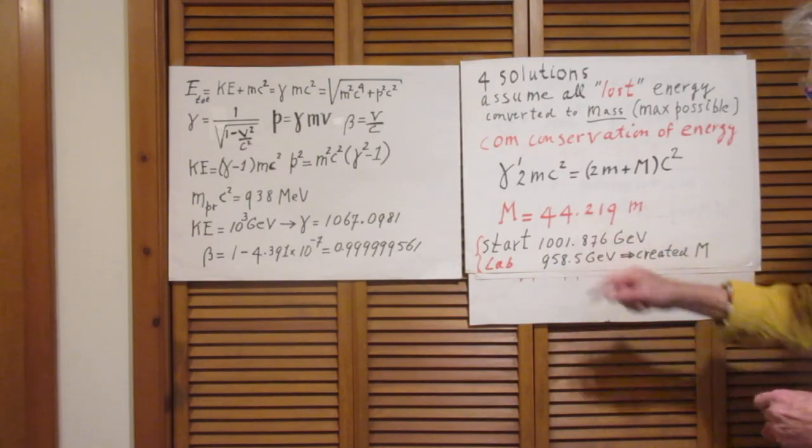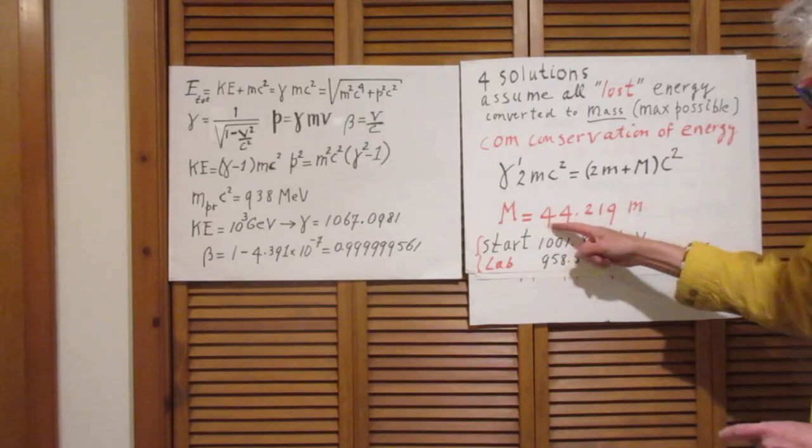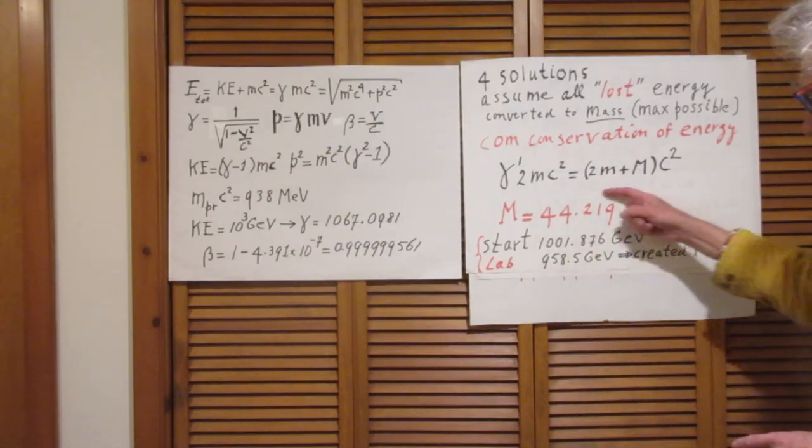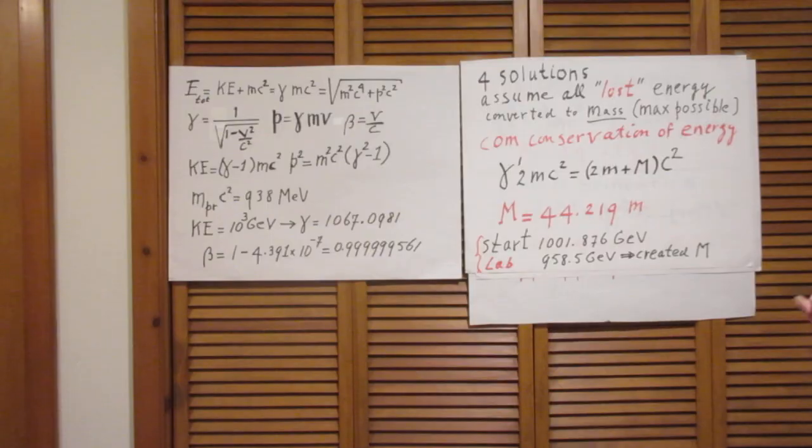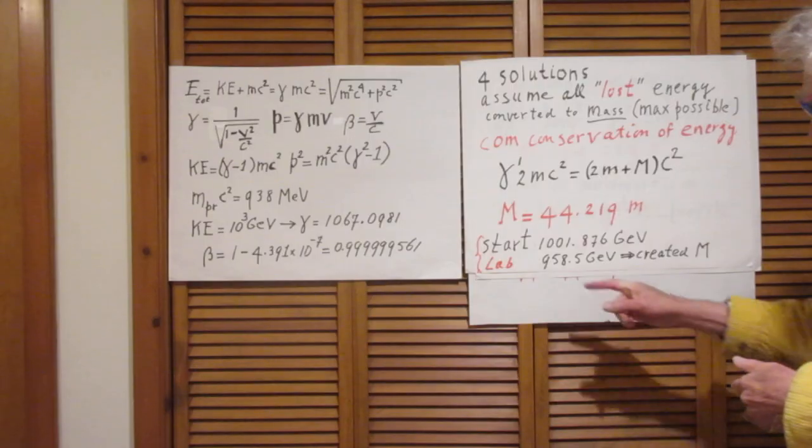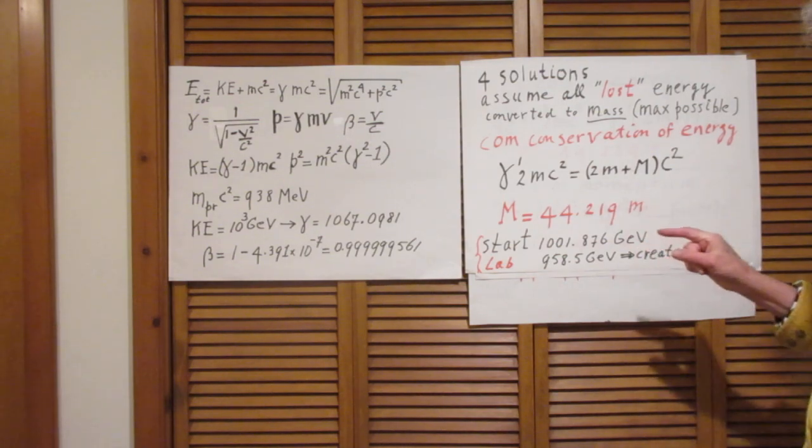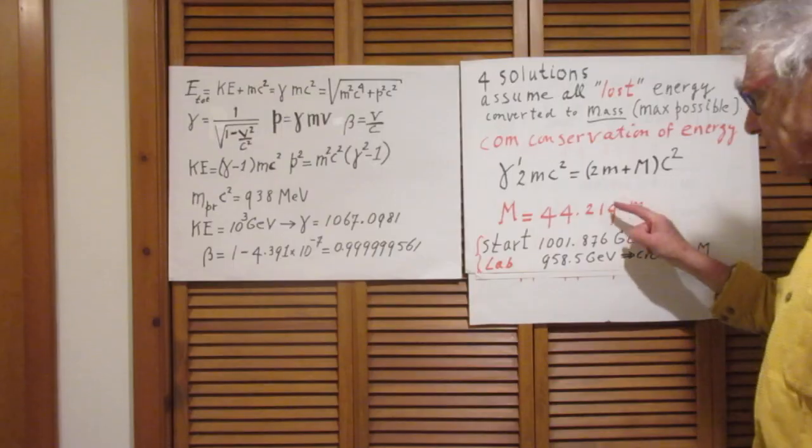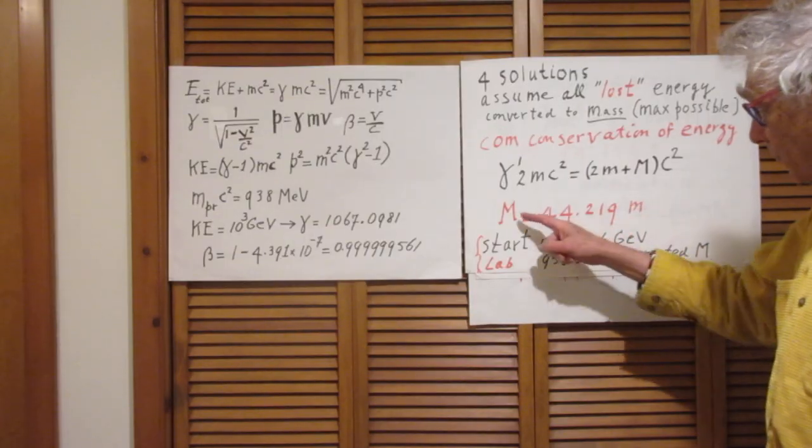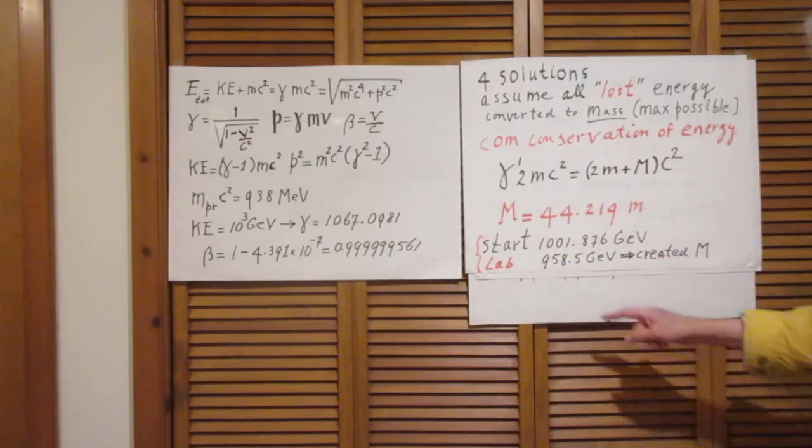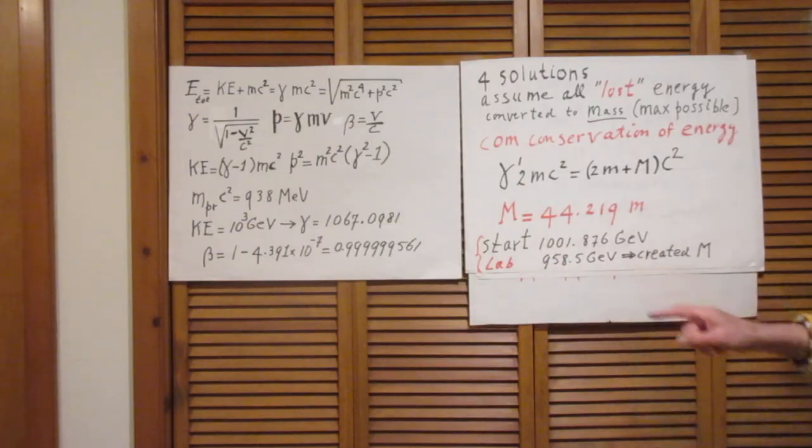And now we have created a particle whose energy in my lab frame, if I go back to my lab frame, the energy of that particle is γ' times this Mc². And that is 958 GeV.